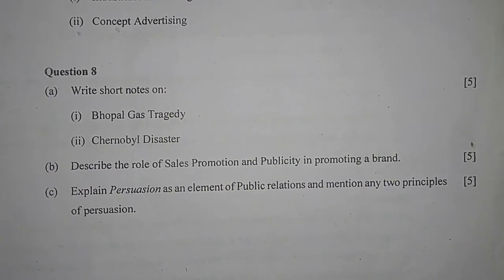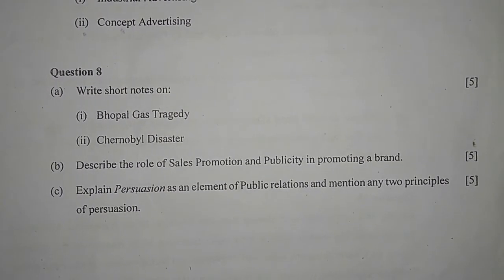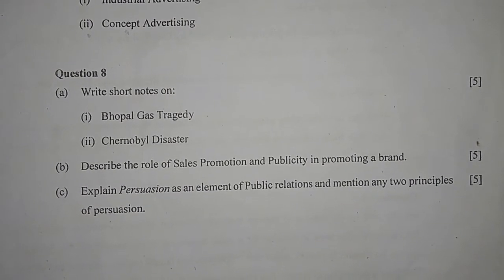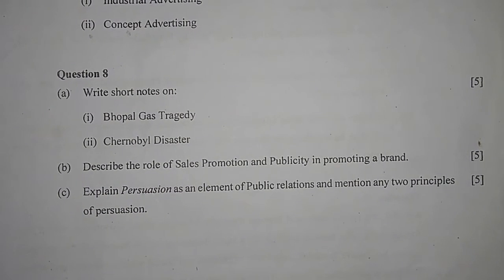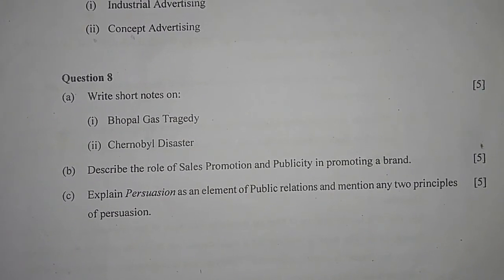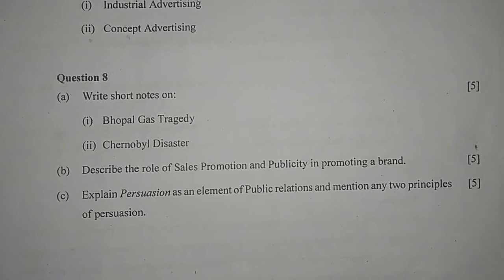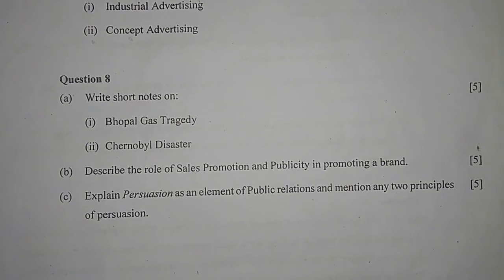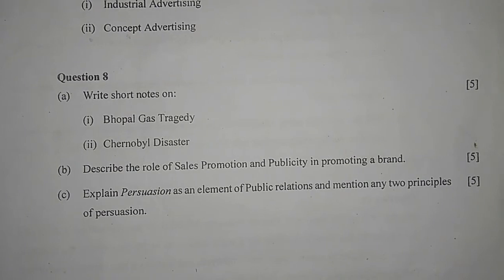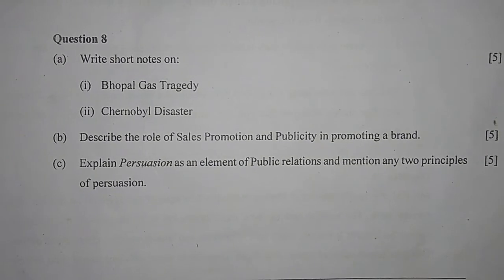Number two: Chernobyl disaster. This was a radioactive disaster at the Chernobyl nuclear plant located in Ukraine. It occurred on 26th April 1986. It is considered to be the worst nuclear disaster in the history of mankind. Large areas of Ukraine and Russia were badly affected. More than 9,000 people died and over six and a half million were affected. The whole city of Chernobyl is still abandoned.